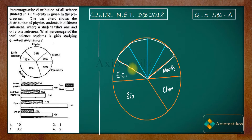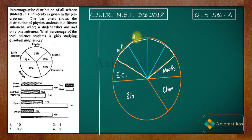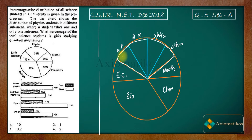Now what I did is I made partitions of the physics students among astrophysics and quantum mechanics. So this one represents astrophysics, this one represents quantum mechanics, this one represents optics, and this one represents others. So these are the five subdivisions — the areas in which a student can choose their subject.